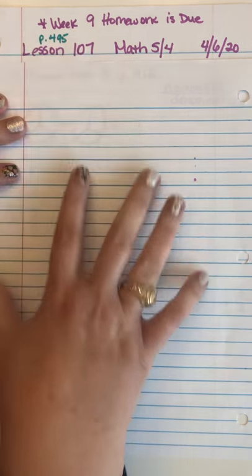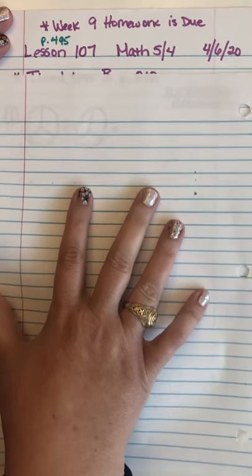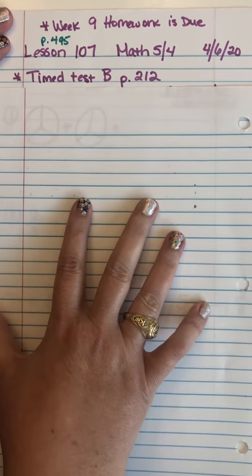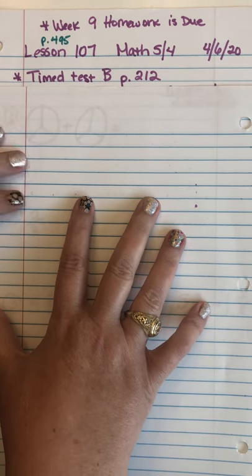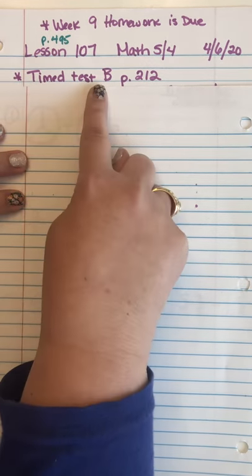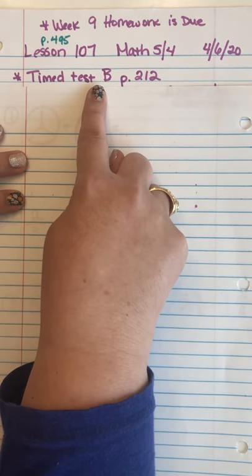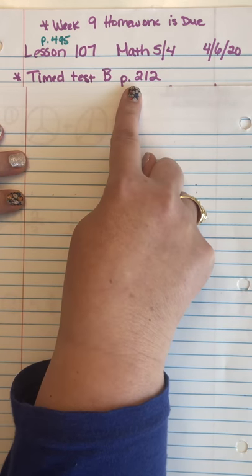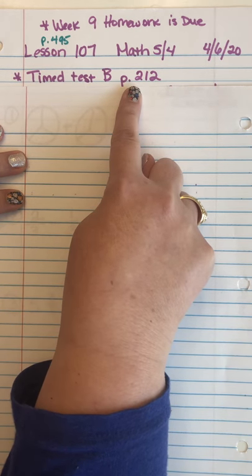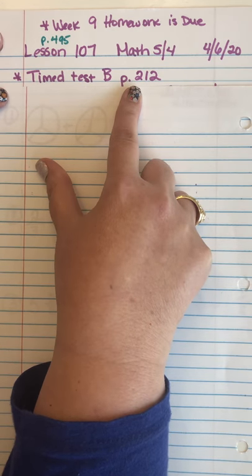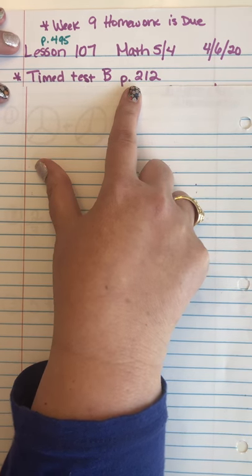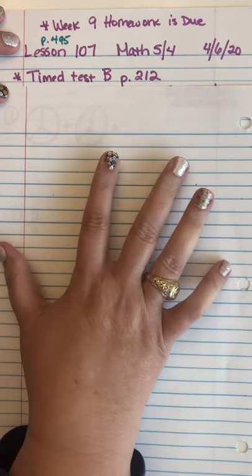Our time test for today is time test B, which is located on page 212 in your test and worksheet booklet. You can take your time to do that and have your parents grade it.